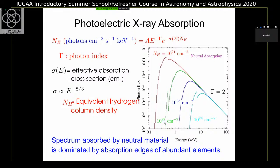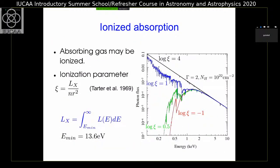The absorption column density affects the X-ray spectrum. If it is heavily obscured, we do not observe X-ray emission below about 10 keV. For neutral absorption, you only see absorption edges, not absorption lines. But for ionized absorption, you see numerous absorption lines. The power-law spectrum passing through ionized material shows signatures of absorption lines as well as absorption edges. The shape of the spectrum and the number and depth of absorption lines depend on the ionization level as well as the column density.